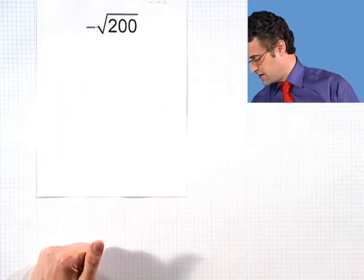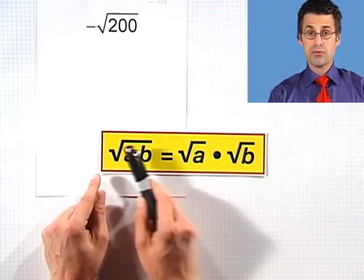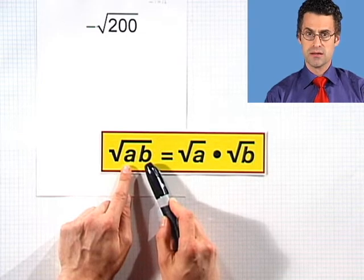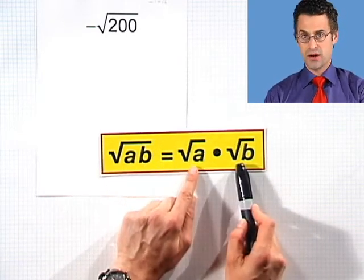And that property that I want to employ here is the property that if we have the square root of a product, that always equals the product of the square roots.